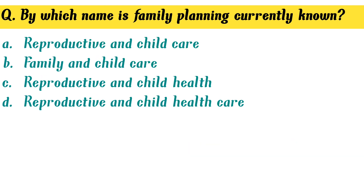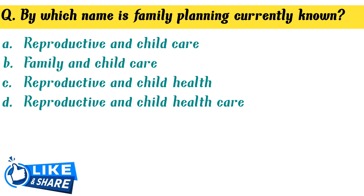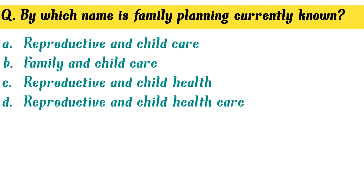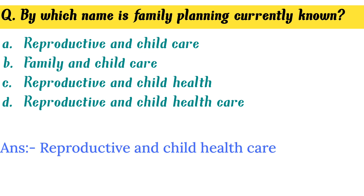By which name is family planning currently known? Option D. Reproductive and child health care is the correct answer.